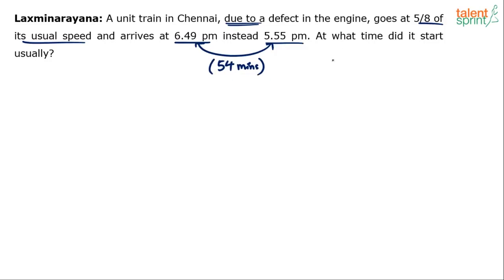From 5:55 to 6 o'clock, it's not very difficult to find out the difference. You should be able to do it mentally. 5:55 to 6 PM is 5 minutes, and this is 49 minutes after 6 PM, so 5 minutes plus 49 minutes, 54 minutes.